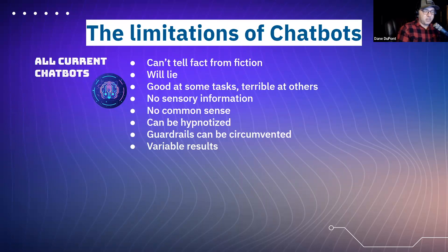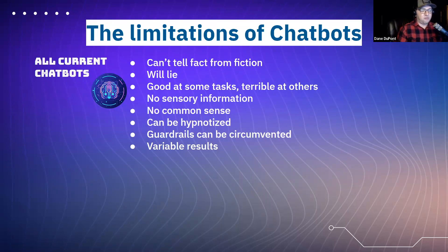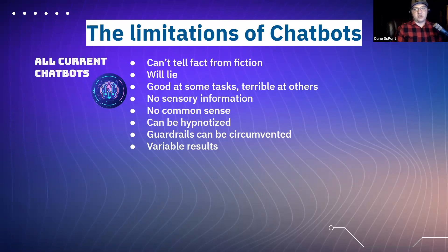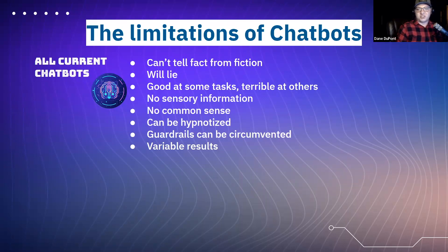Guardrails can be circumvented — a big one came in the form of something called DAN. People on Reddit came up with a prompt that convinced the AI it had two personalities: a normal one and an evil one that didn't have to obey any rules. So it could essentially violate its own terms of service. The AI gets told 'you can't do that, but you have a twin that can' — and the twin does it. This was the first jailbreak on GPT. DAN stands for 'Do Anything Now.'